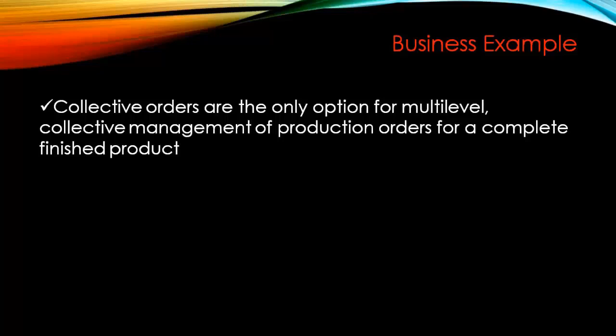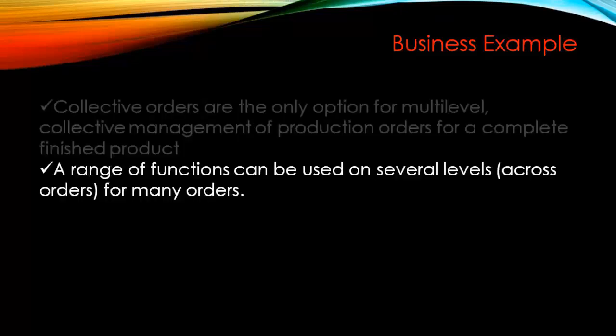What that means is, for example, if you want to create an individual order not only for the finished product but also for each BOM component level — that means whenever you create the production order for the finished product, the BOM component level orders should be created automatically. A range of functions can then be used on several levels across many orders.